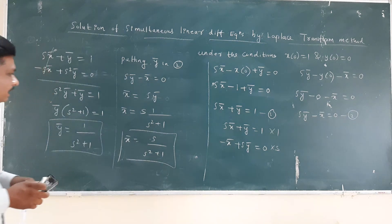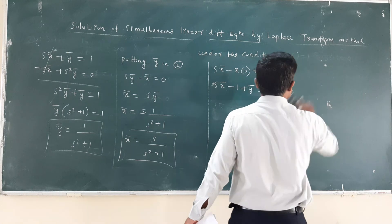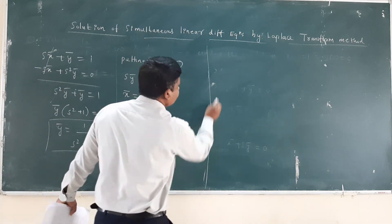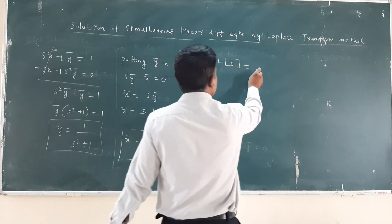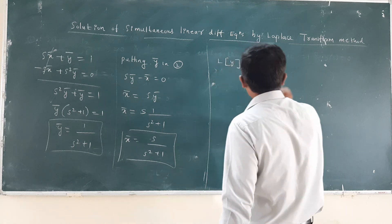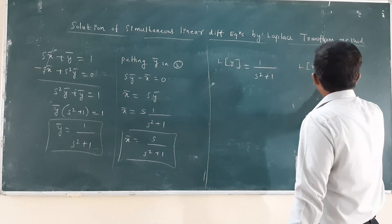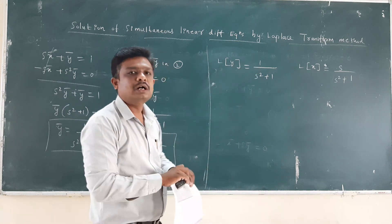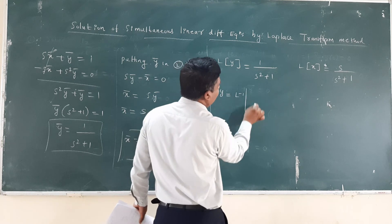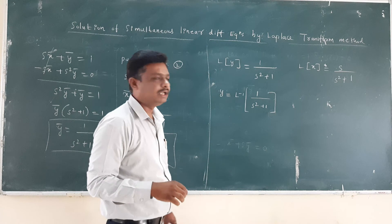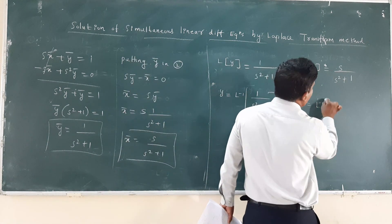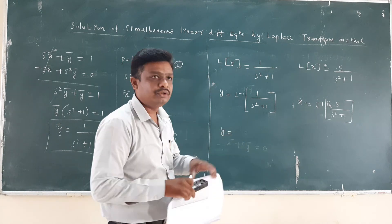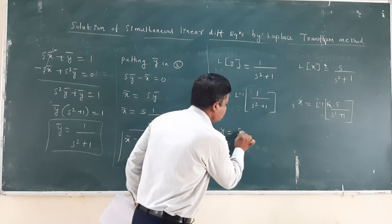So X̄ and Ȳ are found. Now at the end we find x and y. Y̅ = L{y} = 1/(s² + 1), and X̄ = L{x} = s/(s² + 1). So to find y, we take the inverse Laplace of 1/(s² + 1), and x is the inverse Laplace of s/(s² + 1).